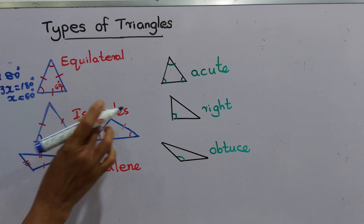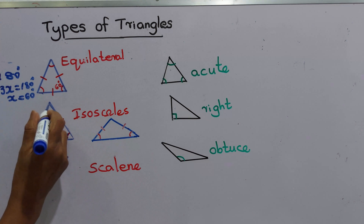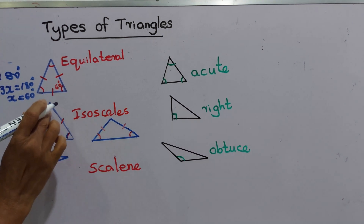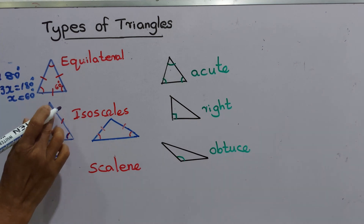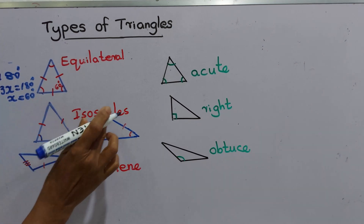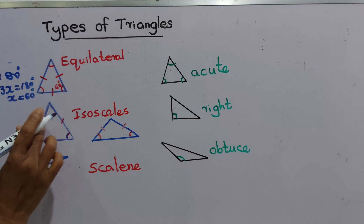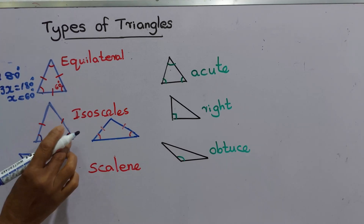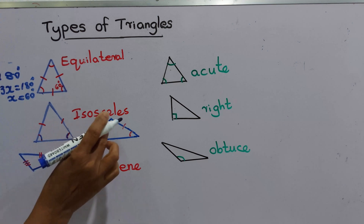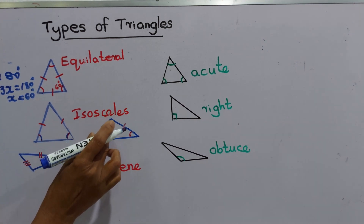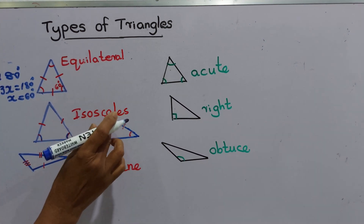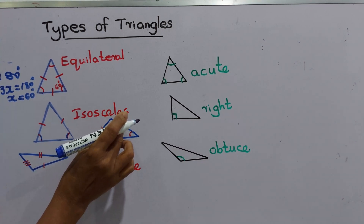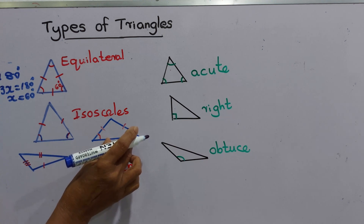We can identify two types within isosceles triangles: acute isosceles triangles and obtuse isosceles triangles. In an acute isosceles triangle, the two equal sides have equal length and the two base angles are equal. In an obtuse isosceles triangle, the two equal sides also have equal length, and the base angles are similarly equal.